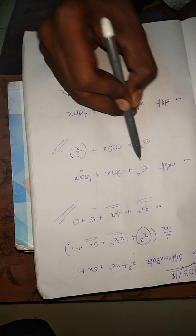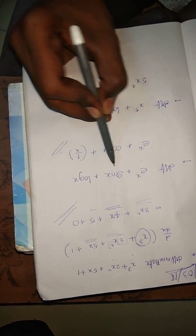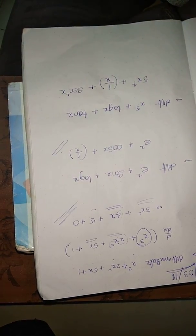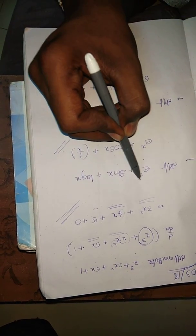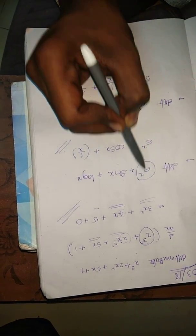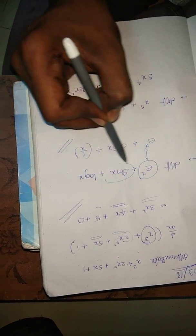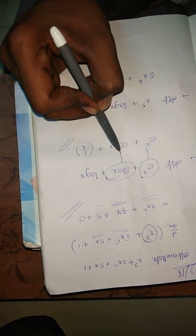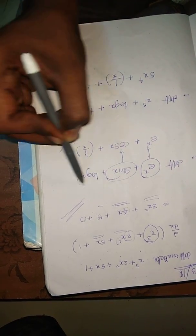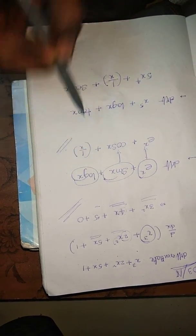Differentiate eˣ + sin x + log x. d/dx of eˣ is eˣ. d/dx of sin x is cos x. d/dx of log x is 1/x.